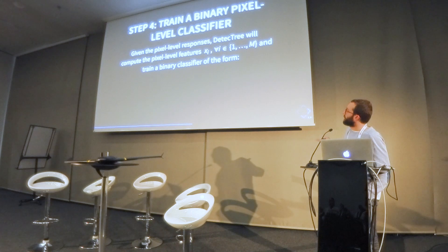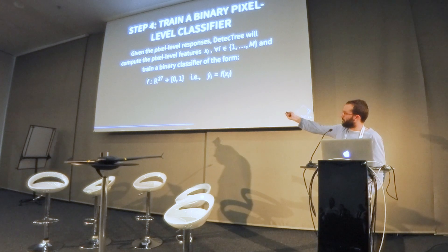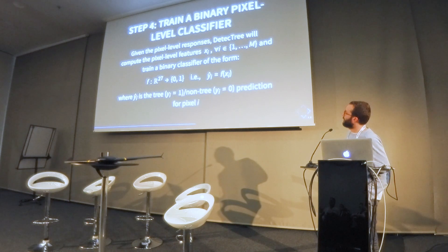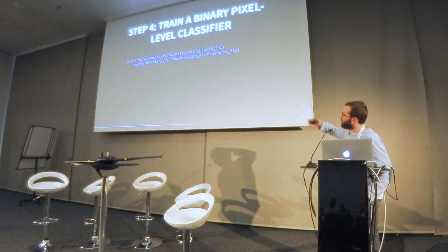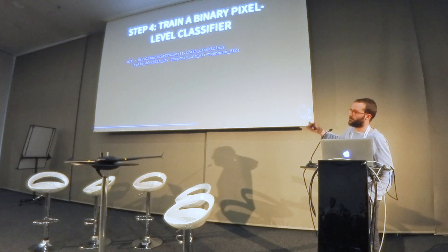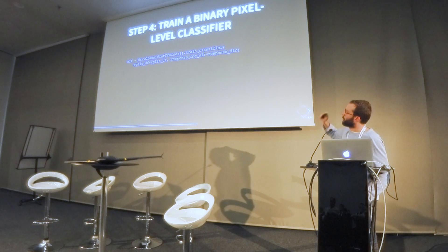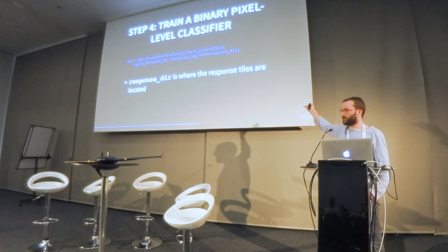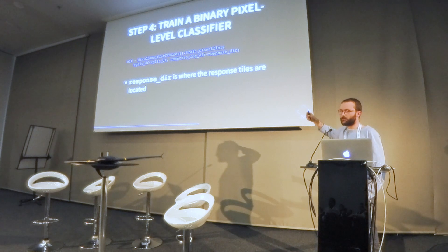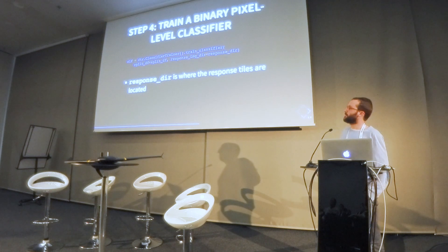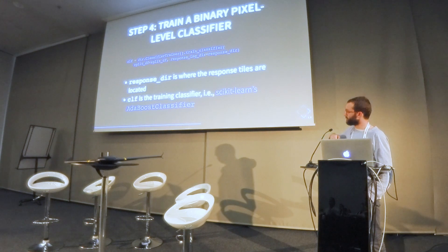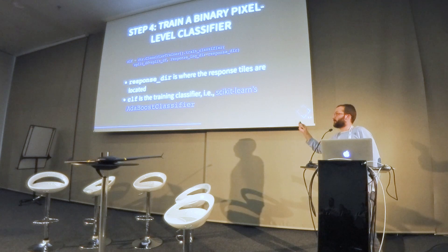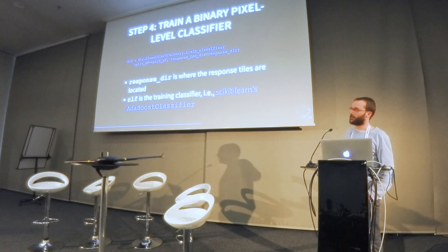Then we train a classifier — a typical machine learning problem mapping vectors of 27 dimensions to a response of whether this is a tree or not. We have an object called the classifier trainer that we configure with some parameters. We give it the split dataframe that Detectree computed before and the path where the response tiles are located. Detectree automatically builds the features, trains the model, and returns a scikit-learn classifier — in this case an AdaBoost classifier, which is what the Google paper used.